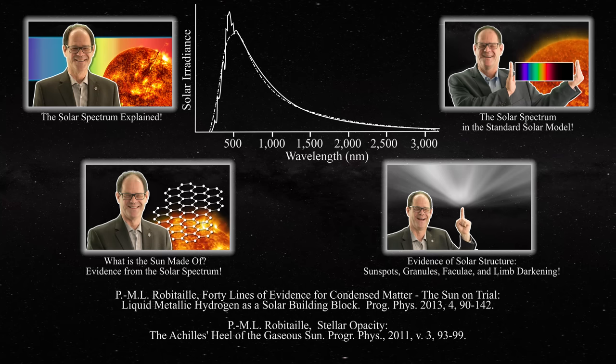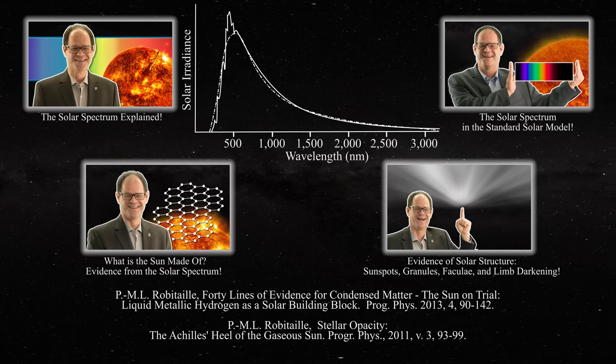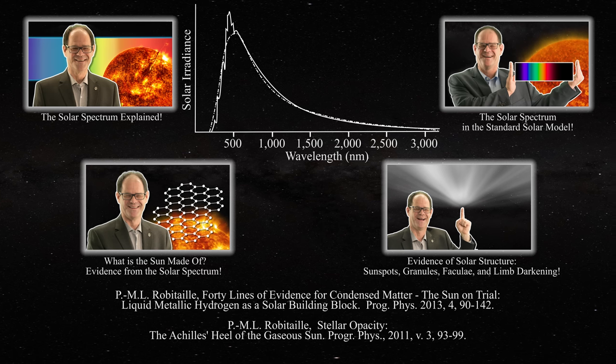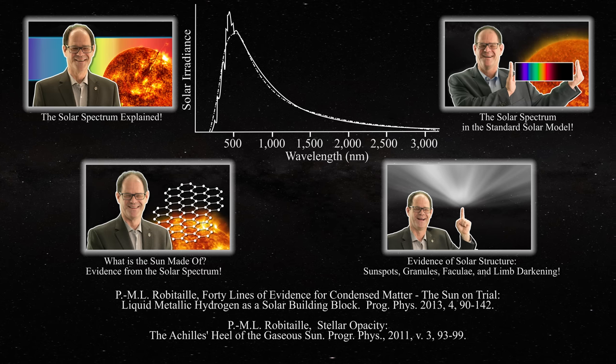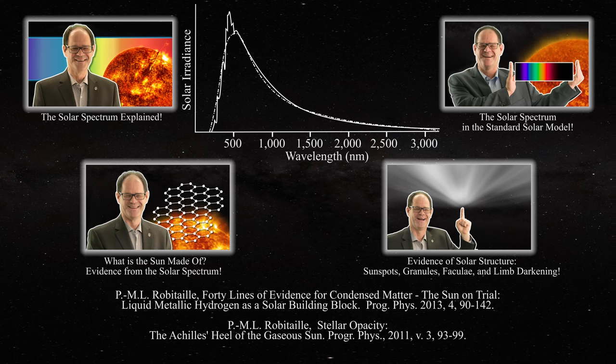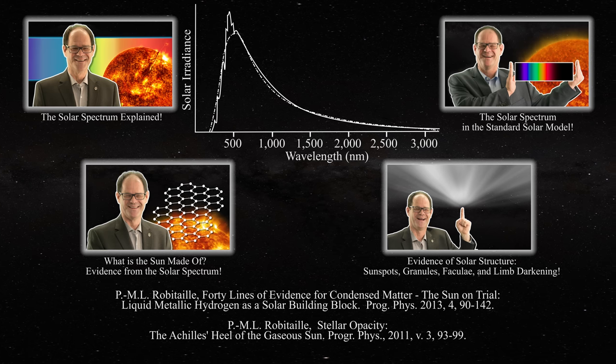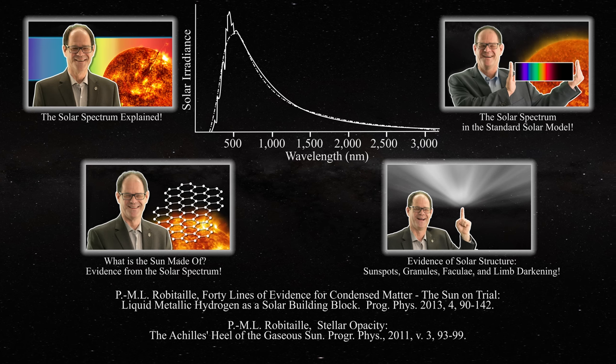All of the models of the gaseous plasma stars are unable to properly account for the solar spectrum and that is why they will eventually collapse. Gaseous plasmas are simply unable to produce a Planckian spectrum as seen in the white light of the sun. People remain insistent in claiming that plasmas can produce what they never have, a Planckian spectrum.